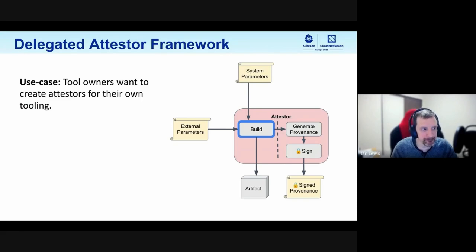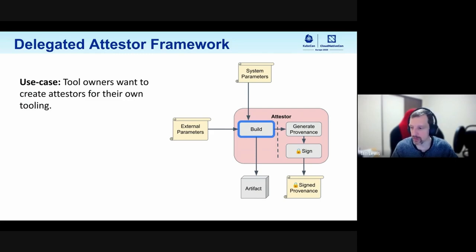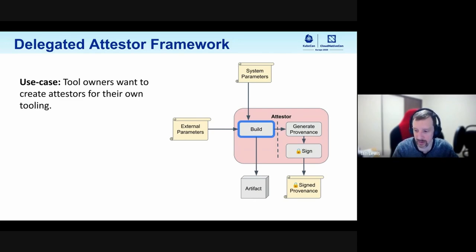The main problem we want to solve is that tool owners want to create attesters for their own tooling. This means, for example, if you have something like Go Releaser for the Go ecosystem, or NPM for the Node.js ecosystem — different types of build tools used to package up software in order to release and publish it — we want people to be able to use those tools and also be able to use the attestation logic that we've developed.